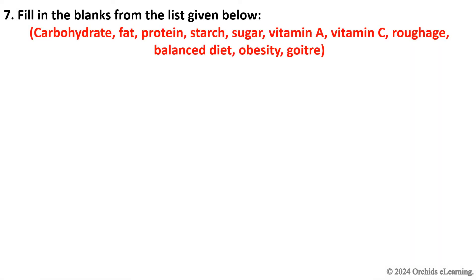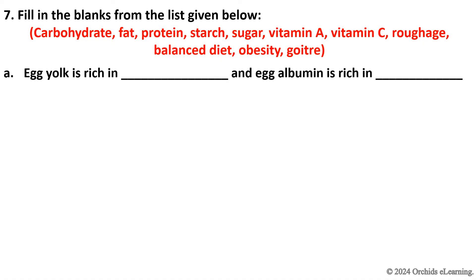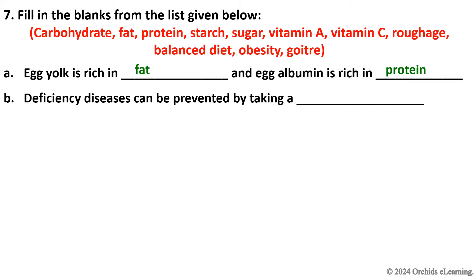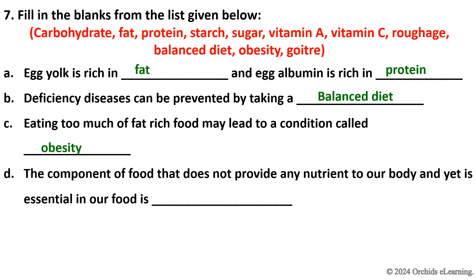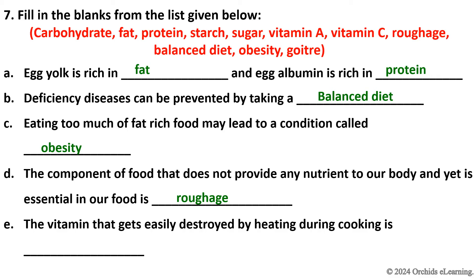Fill in the blanks from the list given below. Egg yolk is rich in fat, and egg albumin is rich in protein. Deficiency diseases can be prevented by taking a balanced diet. Eating too much fat-rich food may lead to a condition called obesity. The component of food that does not provide any nutrient to our body and yet is essential is roughage. The vitamin that gets easily destroyed by heating during cooking is Vitamin C.